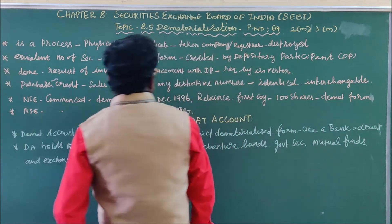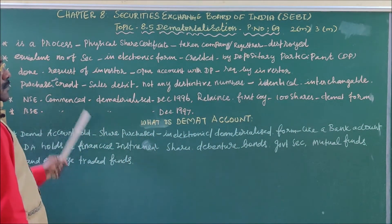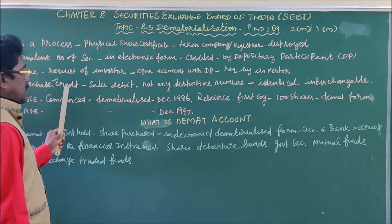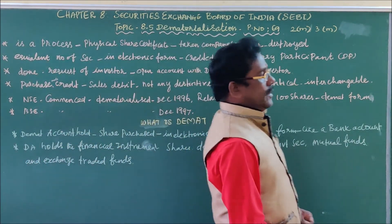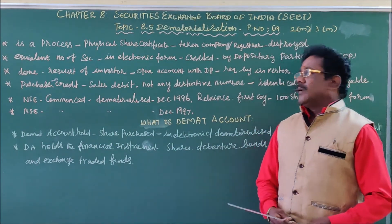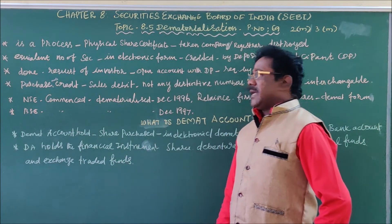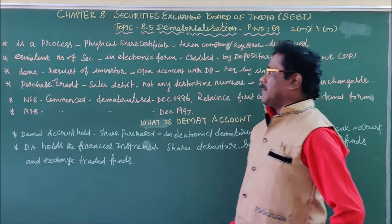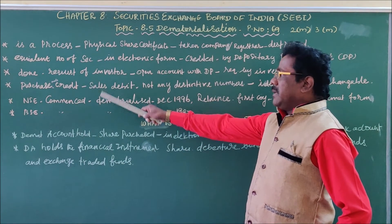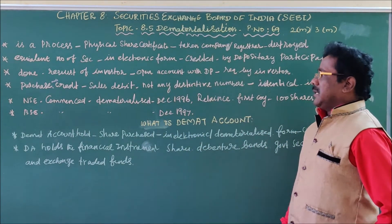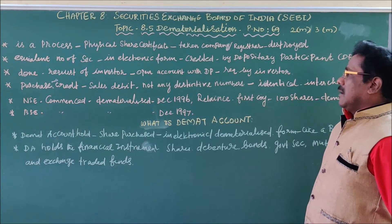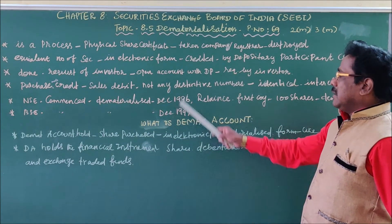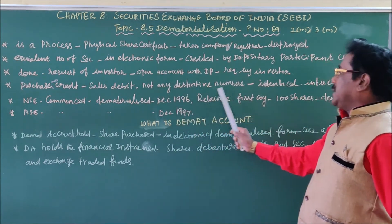After opening such an account, all purchases made by the investors are credited in the demat account and the sale of securities are debited in the demat account. If any purchases of securities, shares, debentures, or bonds are made, they are credited in the demat account of the investor. Similarly, if any sales are made by the investor, those are debited in the demat account.